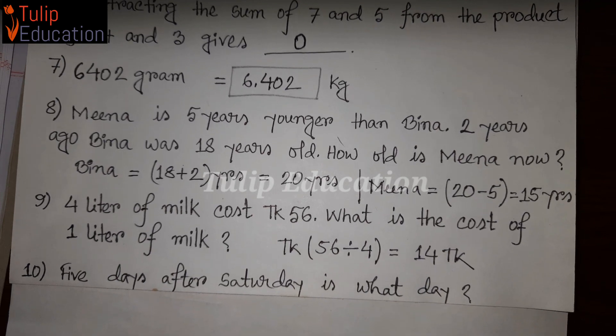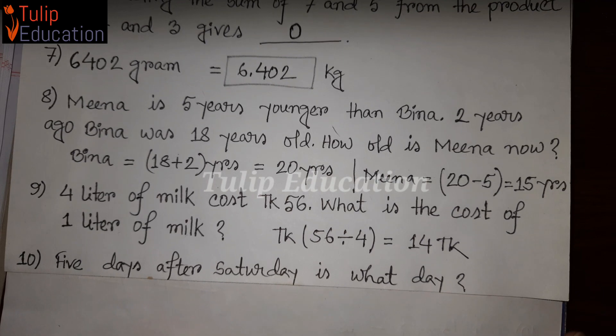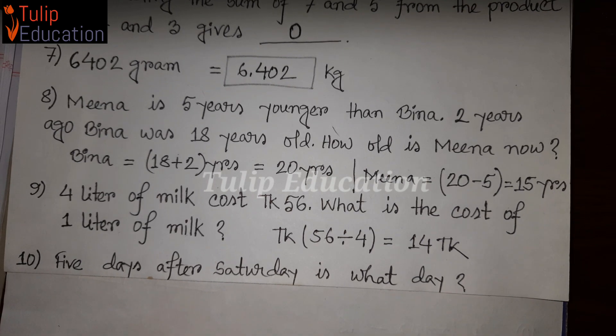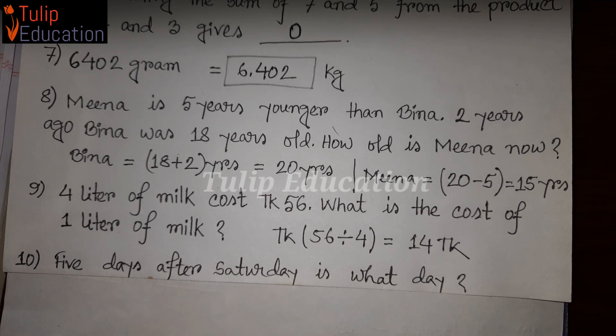Question number 10: 5 days after Saturday is what day? Starting from Saturday, we count 5 days: Saturday, Sunday, Monday, Tuesday, Wednesday, Thursday.